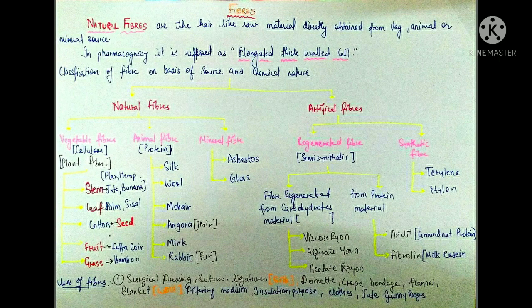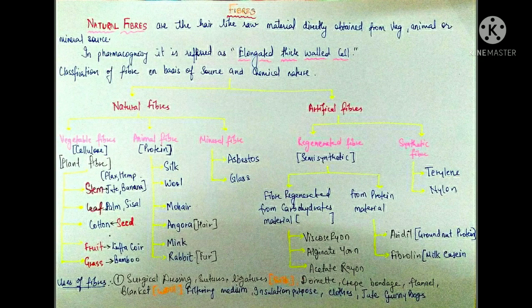The next semi-synthetic fiber comes from protein material. An example is ardil, which is a groundnut protein — obtained from groundnut protein and converted into semi-synthetic fiber by chemical process. Next is fibroline, which is milk casein, also converted through a chemical process into semi-synthetic fiber. The reason for creating regenerated fibers is that they are more durable, more elastic, and have more shelf life and strength.